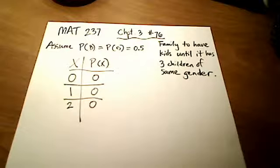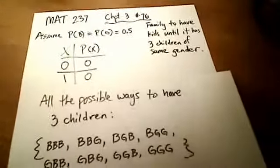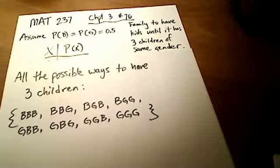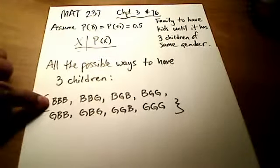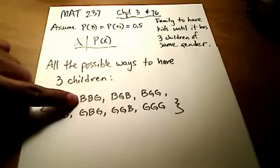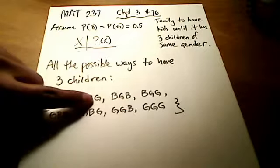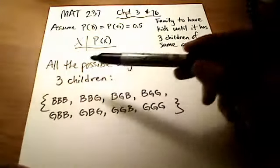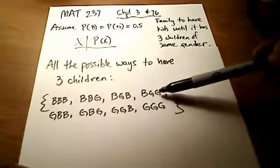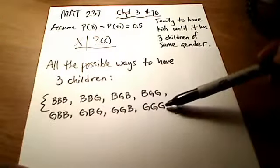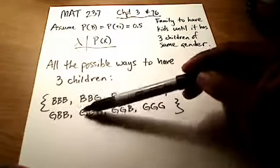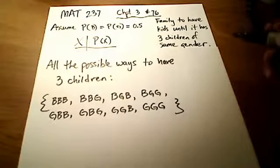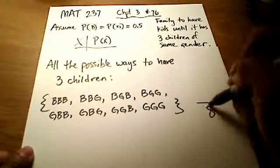Here are all the possible ways of having three children. One way is three boys. Another is boy-boy-girl, then boy-girl-boy, boy-girl-girl — all starting with boy as the oldest. The entire second set of rows starts with girl, replacing each first B with a G. So it's easy to see we have a total of eight possible outcomes.